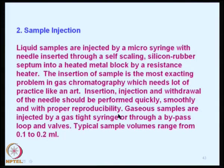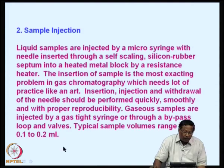For a gaseous sample, you have to take a gas-tight micro syringe, suck the gas into it, and then insert it as usual. It is also possible to introduce the gas through an arrangement of loops and valves. Typical sample volumes range from 0.1 to 2 milliliters, that is up to 200 microliters.